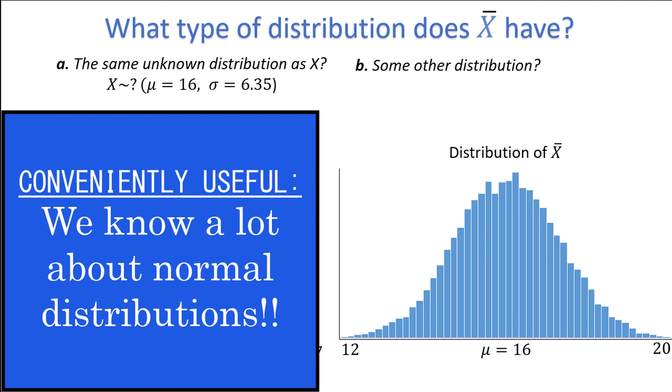The conveniently useful part is that we know a lot about normal distributions, and if we know that any sampling distribution from any population is normal, so long as the sample size is large enough, that makes it much easier to calculate probabilities and make inferences about the population.